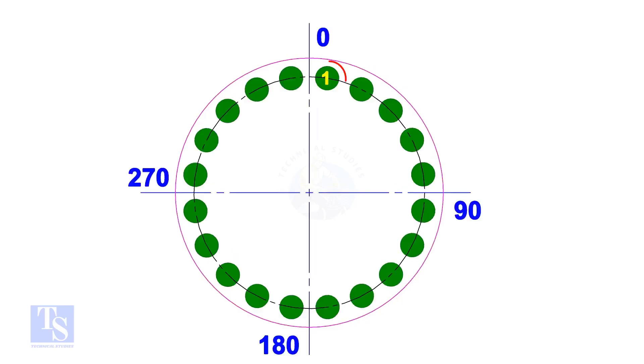Start tightening the first bolt from 0 degree, but only 20% of the torque value. Tight the bolt next to 180 degree. That is exactly 180 degree opposite to the first bolt. Tied the bolt next to 90 degree, that is actually 90 degree to the previous bolt.